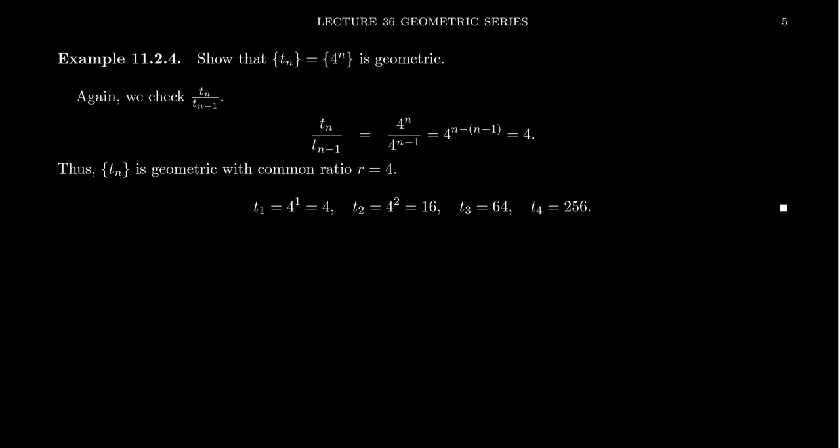Simplifying that, you can subtract the powers, you get 4^(n-(n-1)). The n's cancel because you get n minus n. Then you get negative negative 1. You end up with 4^1, that is 4. That's our constant ratio. This sequence looks like 4, 16, 64, 256. We're just looking at powers of 4.